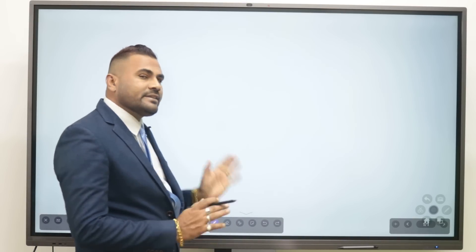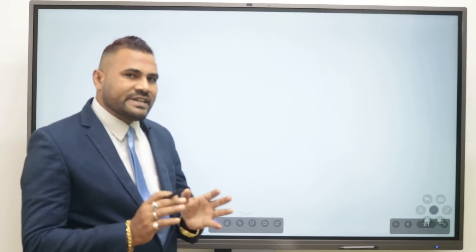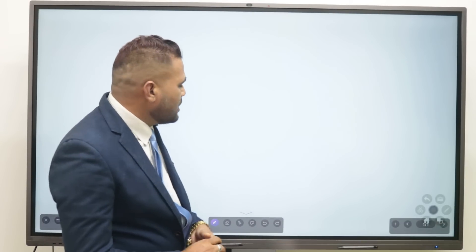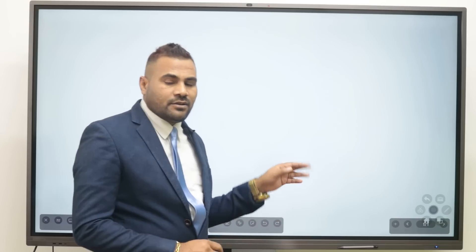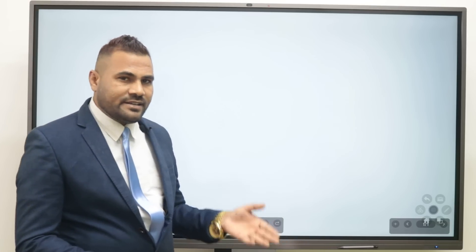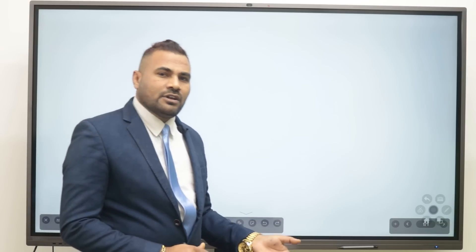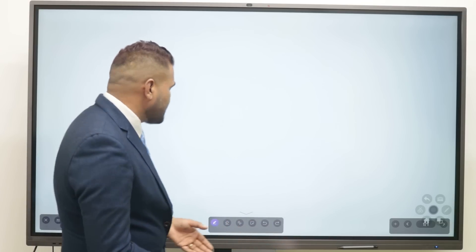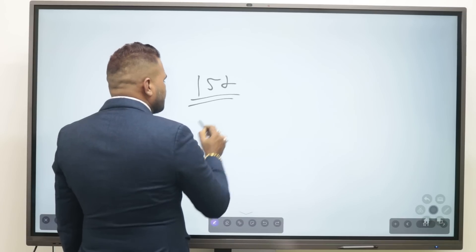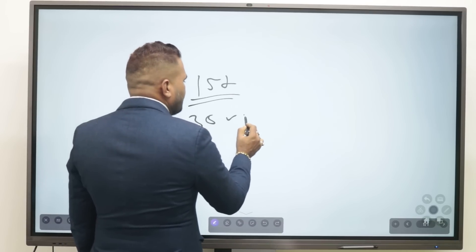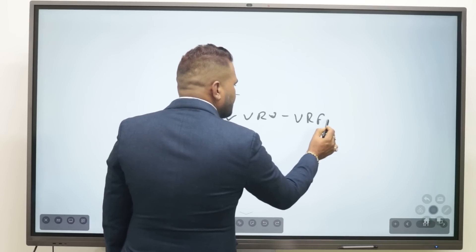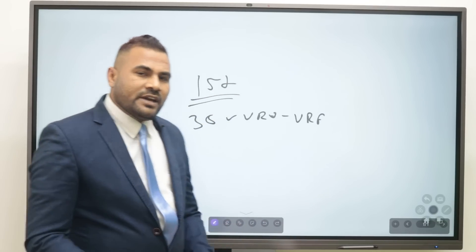If you don't know how to do the addressing, test operations, wiring connections, and everything else, you cannot do anything with this system. First, you need to get professional technical training, and then you can understand everything about this system. I will cover in my training program all about installations, addressing, test operations, and error code solving for 50-plus companies. Around the world, 35-plus companies manufacture VRV and VRF systems, so learning about VRV and VRF is very important.